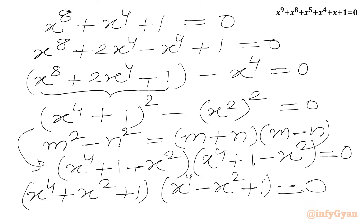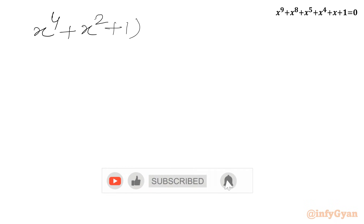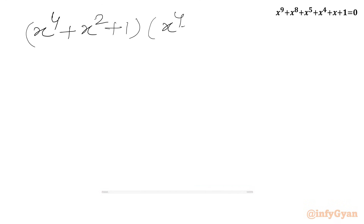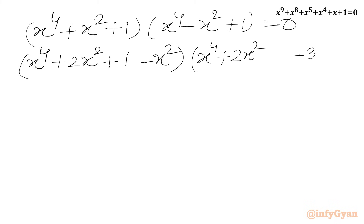We will factorize both brackets further. In the first bracket, x power 4 plus x squared plus 1: we write x squared plus 1 plus 2x squared minus x squared, giving (x squared plus 1) squared minus x squared equal to 0. In the second bracket, x power 4 minus x squared plus 1: we write x power 4 plus 2x squared plus 1 minus 3x squared, which is (x squared plus 1) squared minus 3x squared equal to 0.